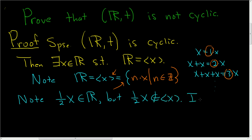But 1 half x is not in this set. If it were, then we could write 1 half x equals nx for some integer n. We could certainly do that if it were. So let's carefully reach a contradiction here. So why do we have a contradiction? Well, first,